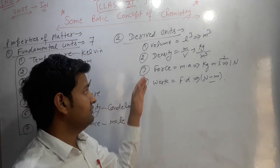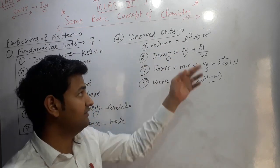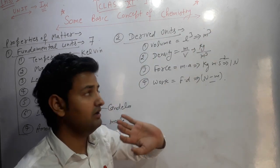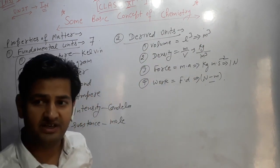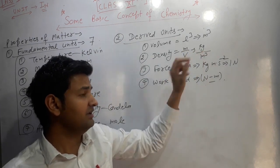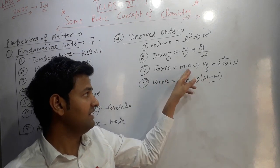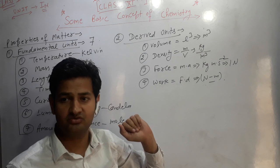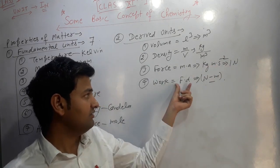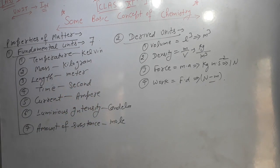An example of a derived unit is volume: volume equals length × breadth × height, so its unit is meter cubed (m³). Density is mass divided by volume, so its unit is kilogram per meter cubed. Force is mass × acceleration — mass in kilograms, acceleration in m/s² — giving 1 newton. Work is force × displacement, so its unit is newton·meter.